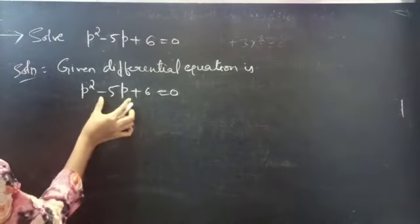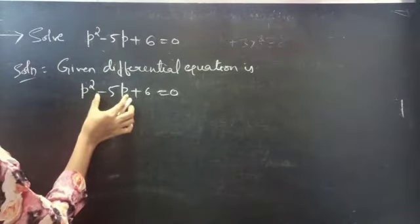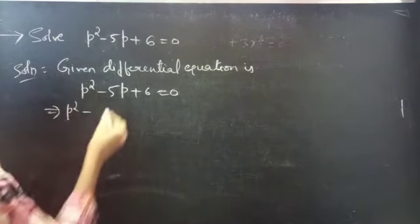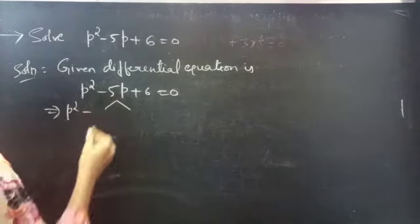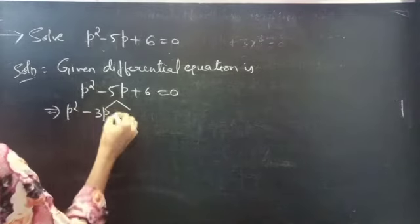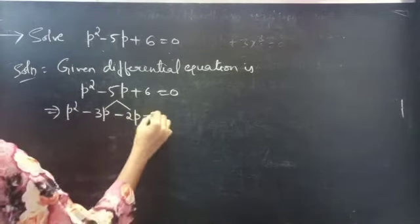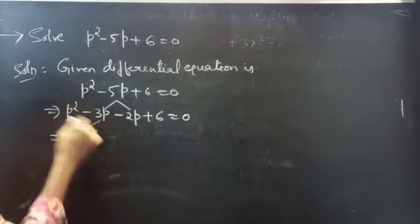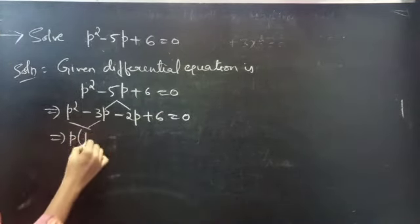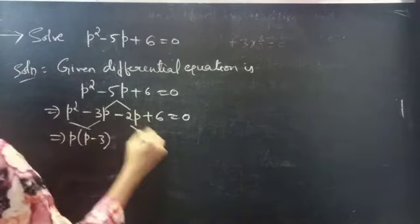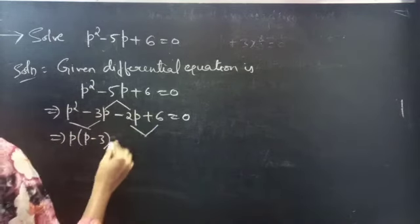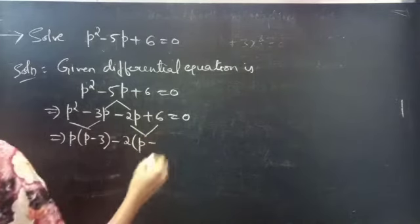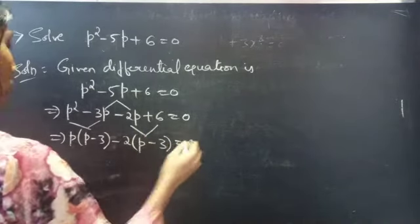Now, we can rewrite this by splitting the minus 5P. Then, P squared minus 3P minus 2P plus 6 equals to 0. Now, take P common from the first two terms, you get P of P minus 3. And take 2 common from the next two terms, you get minus 2 of P minus 3 equals to 0.